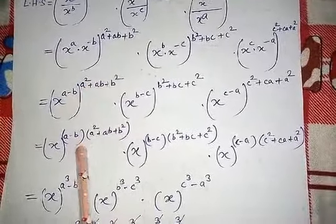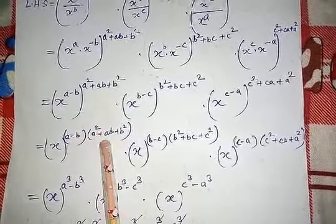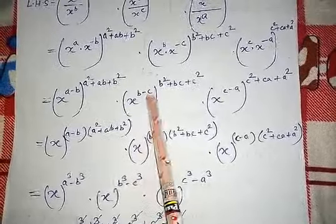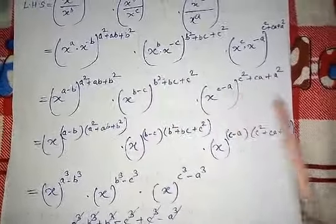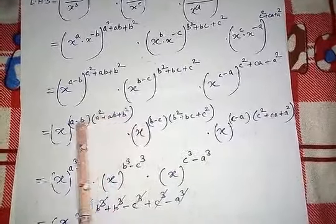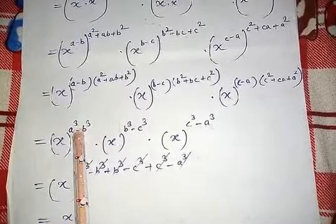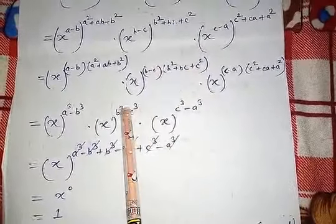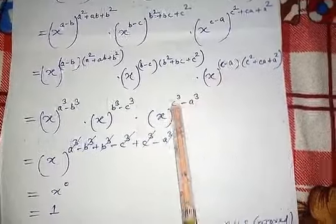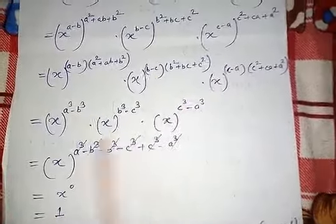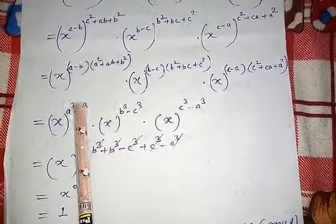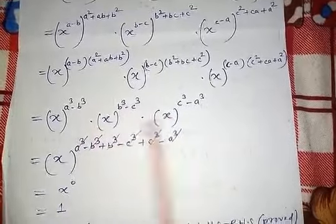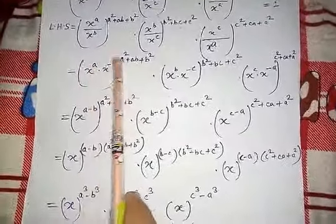This is the internal power and this is the external power, so we write both powers together outside. We get X to the power (A minus B)(A² + AB + B²), which is the formula for A³ minus B³. Similarly the second expression becomes B³ minus C³, and the third becomes C³ minus A³. All three X terms become a single X with all powers added: A³ minus B³ plus B³ minus C³ plus C³ minus A³ — everything cancels to X power 0, which equals 1. LHS equals RHS, proved.